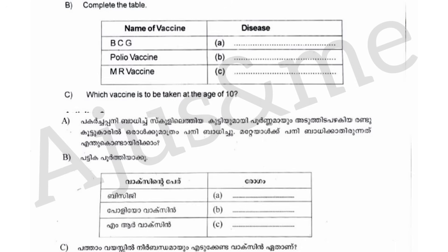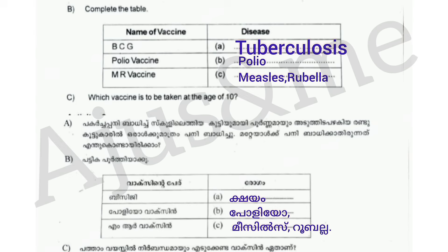What is the vaccine? The first vaccine is BCG — that is for tuberculosis. Then polio vaccine — it prevents polio. Then MR vaccine — it prevents measles.